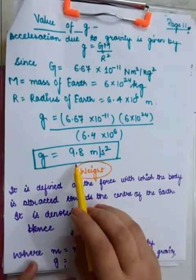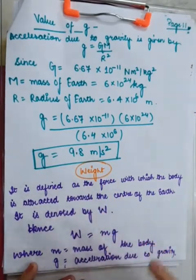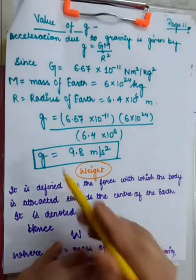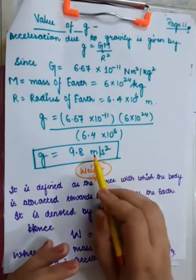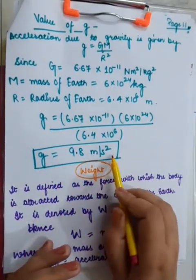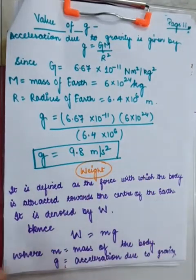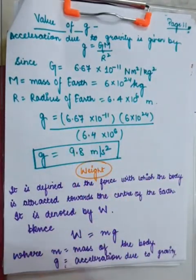You are going to get the value of small g, which comes out to be 9.8 meters per second square, which is very, very near to 10. Since acceleration always has the units meters per second square, so here also I am using that.